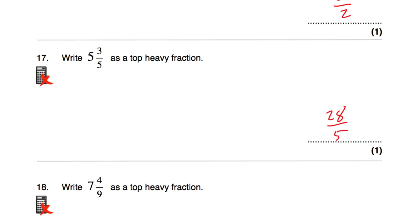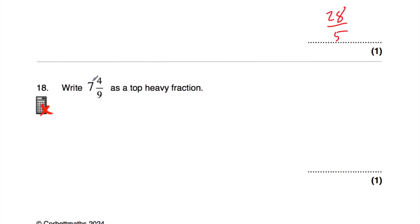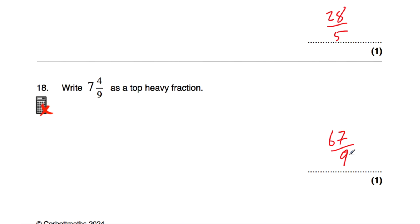Question number 18: write 7 and 4 ninths as a top-heavy fraction. 7 times 9 is 63, plus 4 would be 67, so it's going to be 67 over 9 — 67 ninths. Another way to think about it: if you've got 7 wholes cut into ninths, you'd have 63 ninths, and then adding 4 gives 67 ninths.